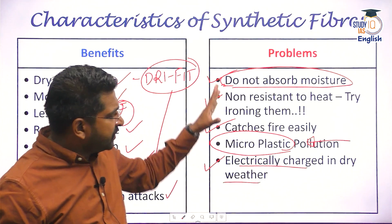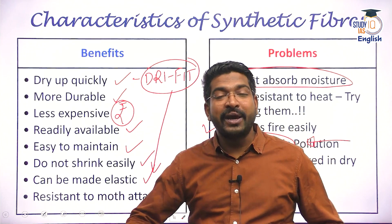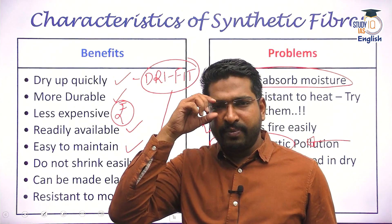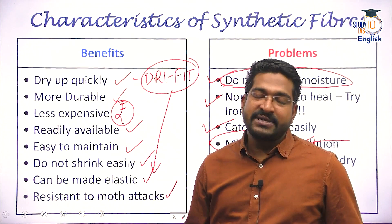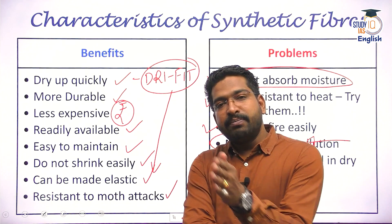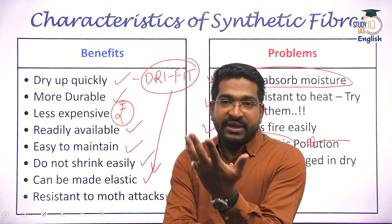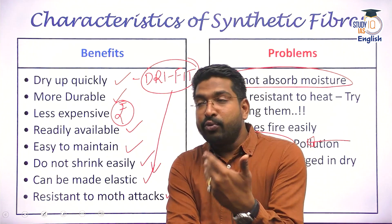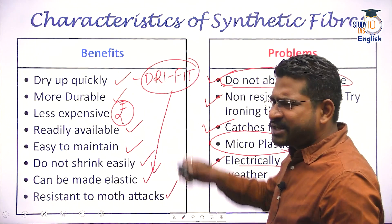Nonetheless, when we talk about advantages and disadvantages, I'd say advantages outweigh the disadvantages, which is why synthetic fibers are being used extensively these days. From a Mains perspective, you need to prepare this more thoroughly — for example, how synthetic fabrics are becoming a bigger challenge to agriculture in India, or how synthetic clothes coming from Bangladesh and Vietnam are challenging India's textile industry, or what India is doing to develop different kinds of synthetic textiles in a more sustainable way.